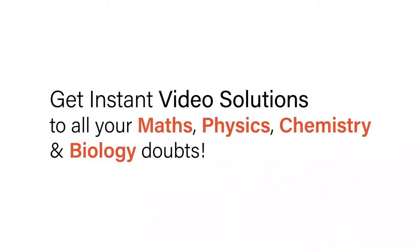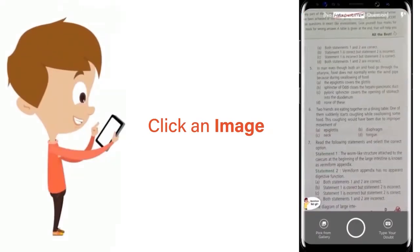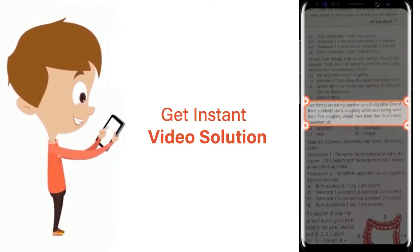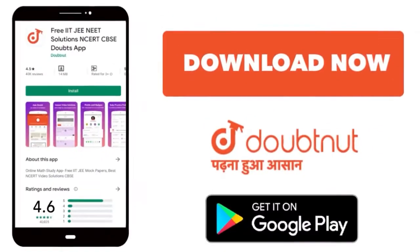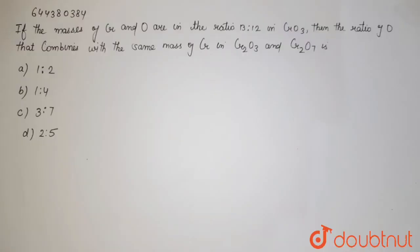With Doubtnet, get instant video solutions to all your maths, physics, chemistry, and biology doubts. Just click the image of the question, crop the question, and get instant video solution. Download Doubtnet app today. The masses of chromium and oxygen